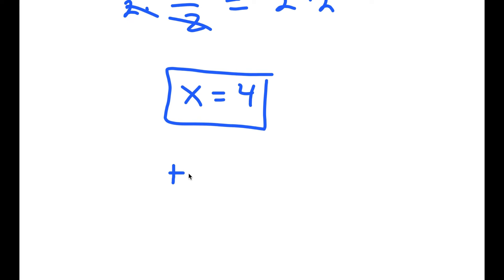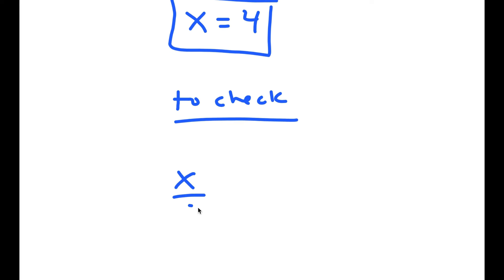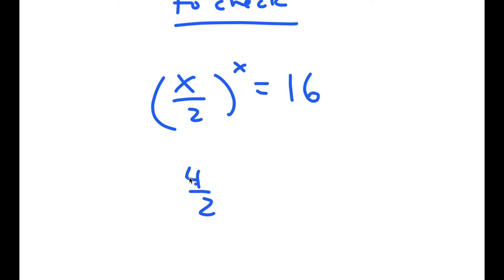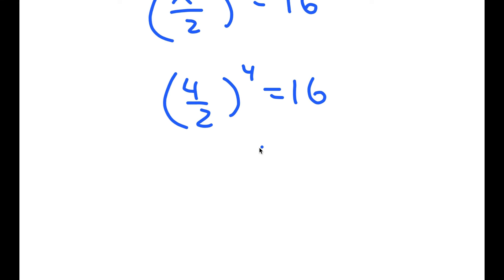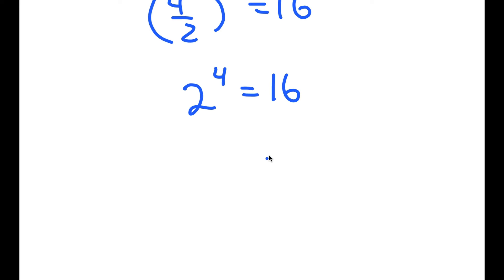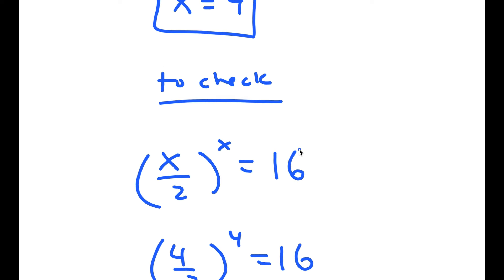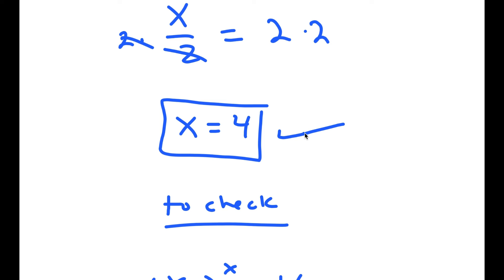Now, to check: I have x over 2 to the power of x is equal to 16. x equals 4, so I get 4 over 2 to the power of 4 is equal to 16. 4 over 2 is 2, so I get 2 to the power of 4 is equal to 16. And 2 to the power of 4 is 16, so I get 16 equals 16. Because this is right, I know that my solution is right.